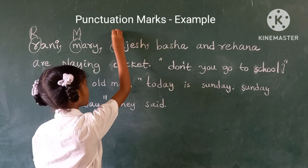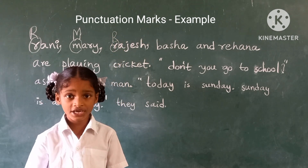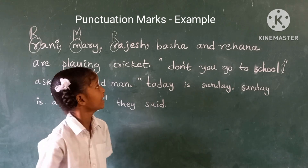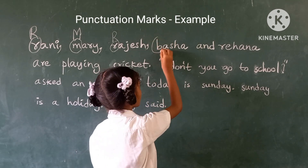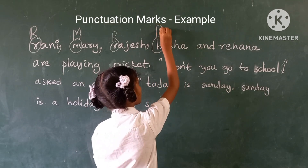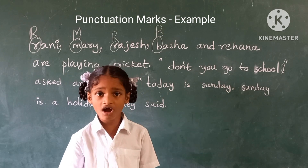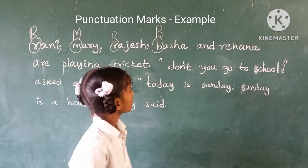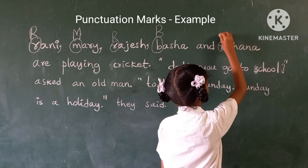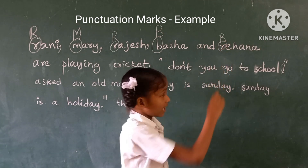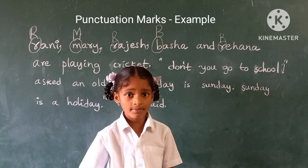Person. Rajesh, our capital letter because it is beginning of a name of a person. Basa, big capital letter because it is beginning of a name of a person. Raheena, our capital letter because it is beginning of a name of a person.